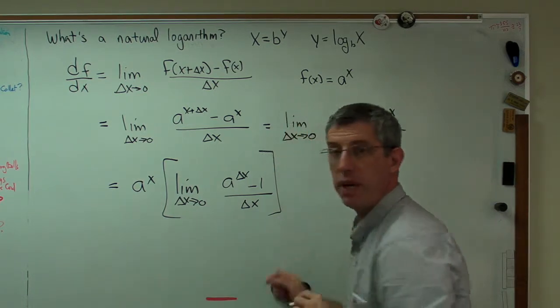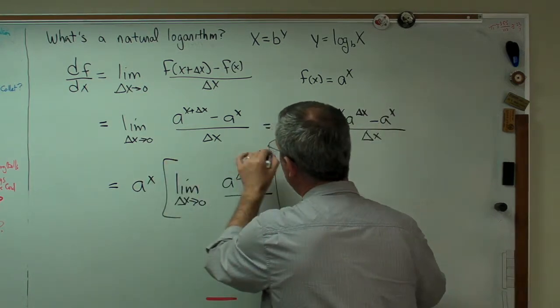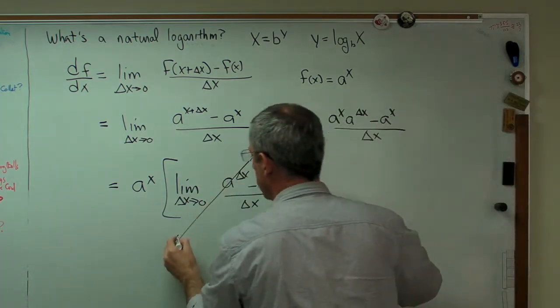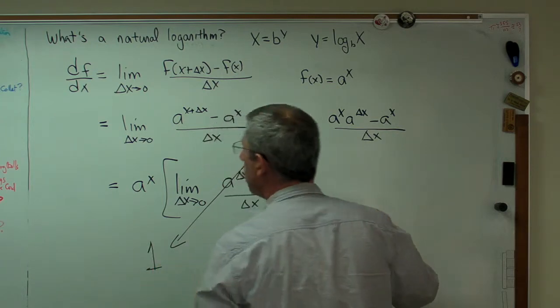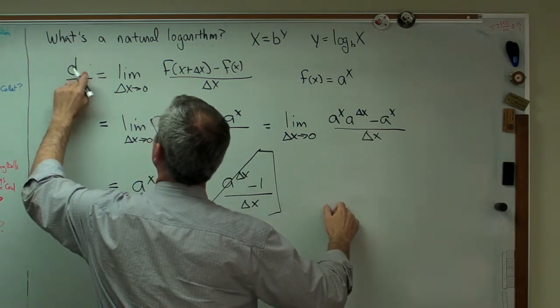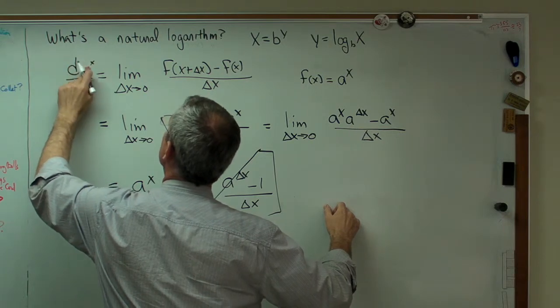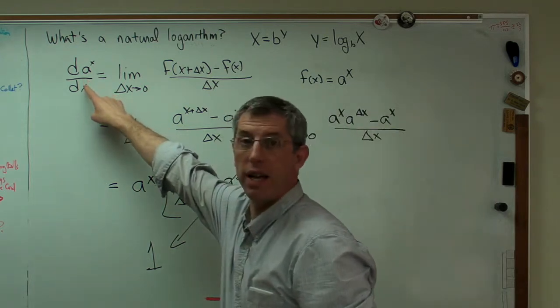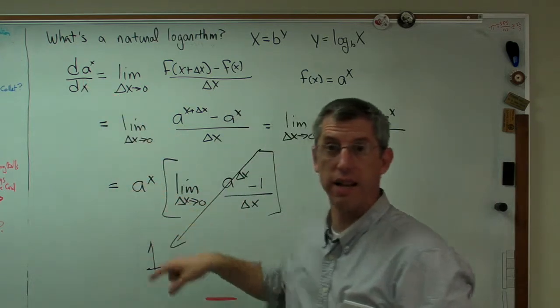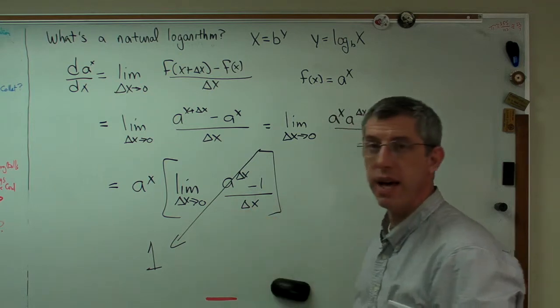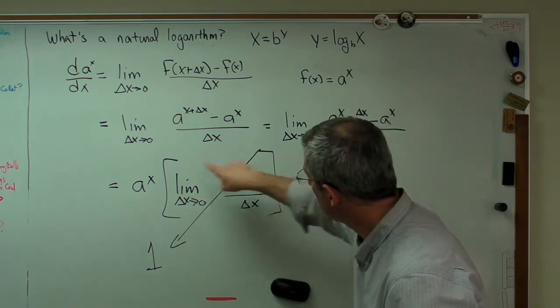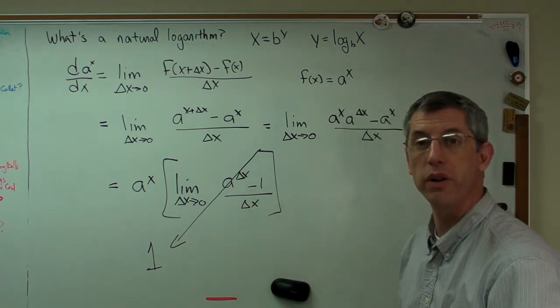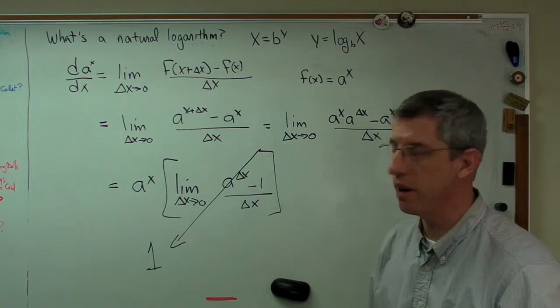Now, my life would be easier if everything in that bracket became 1. I want this to go to 1. That would mean that I would replace this with a to the x. If the derivative of a to the x was a to the x, that would be great. So, how do I make that happen? That means this thing here, this limit, it's inside those brackets, has to go to 1.